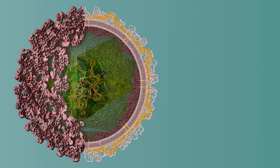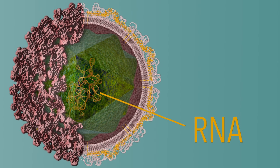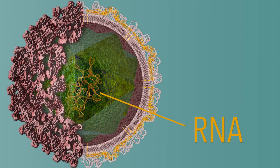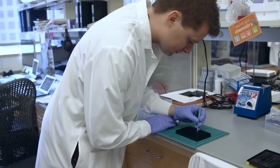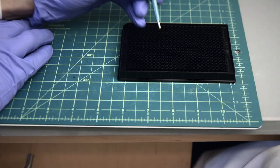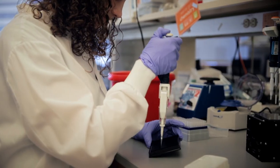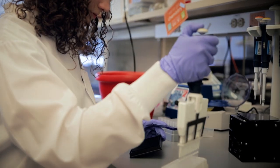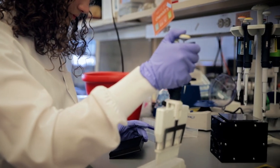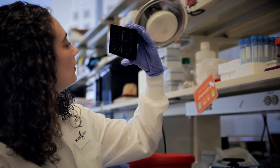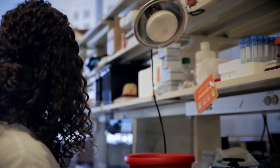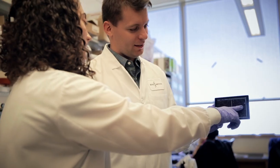Zika virus is an RNA virus, which basically means that the genome it's carrying around inside has RNA in it. The idea is that we create an RNA based sensor, and then you hydrate it with a sample, and then depending on if Zika virus is present or not, there's a color change and you can easily see it with the naked eye.